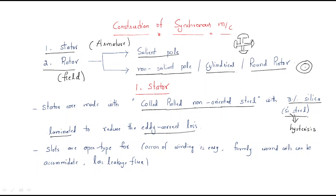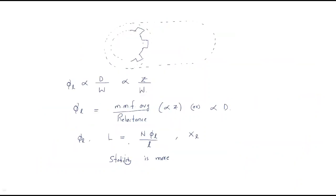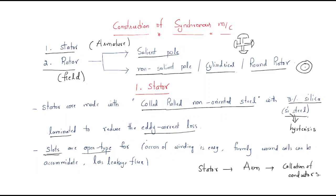The stator is used as the armature. The armature is a collection of conductors — it consists of a number of conductors. To accommodate these conductors, we require slots. There are so many slots available here. The slots are of open type. Generally we have three types of slots: open type, semi-closed type, and closed type. The stator of the synchronous machine uses open type slots.